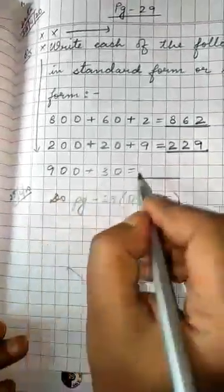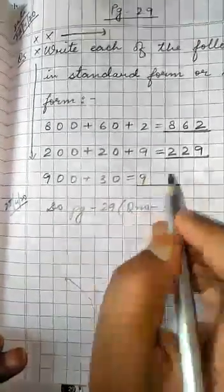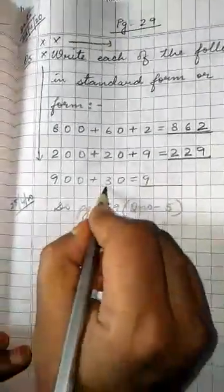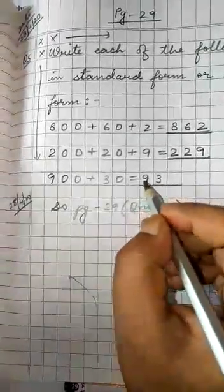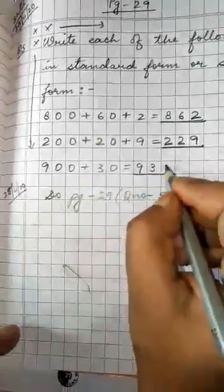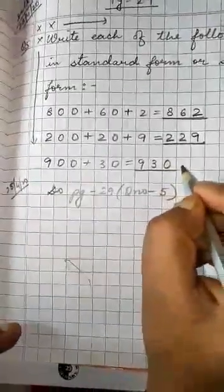Now 930: 9 is in hundreds place. Tens: 30 means 3 tens, tens place. 3 is in tens place. And ones place is not given, so in ones place you write 0. Okay, children?